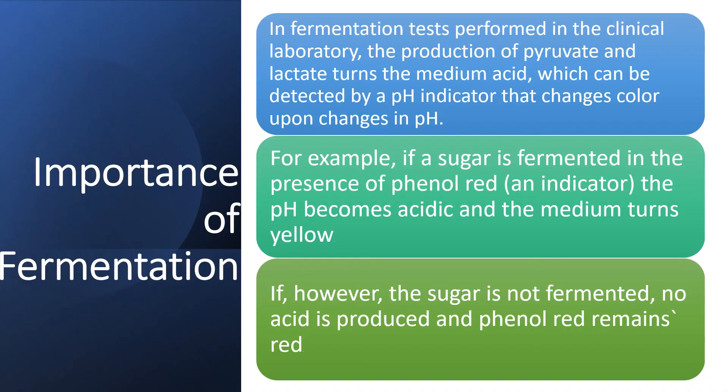What is the importance of fermentation? In fermentation tests performed in the lab, production of pyruvate and lactate turns the medium acidic, which can be detected by a pH indicator that changes color upon changes in pH. For example, if a sugar is fermented in the presence of phenol red as an indicator, the pH becomes acidic and the medium turns yellow. If the sugar is not fermented, no acid is produced and the phenol red indicator remains red.